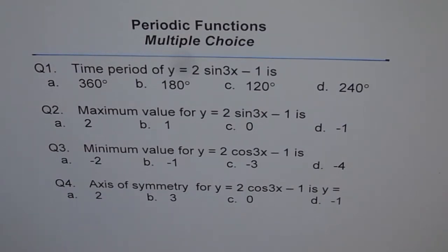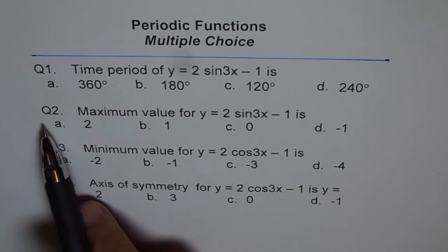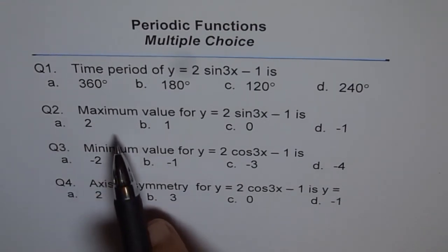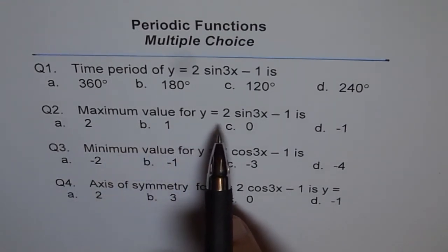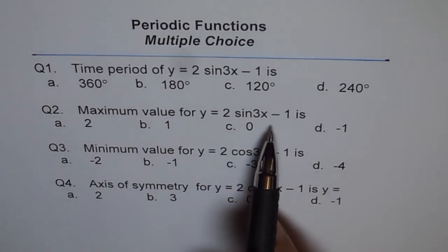Question 2. Maximum value for y = 2 sin 3x − 1 is: a) 2, b) 1, c) 0, or d) −1.